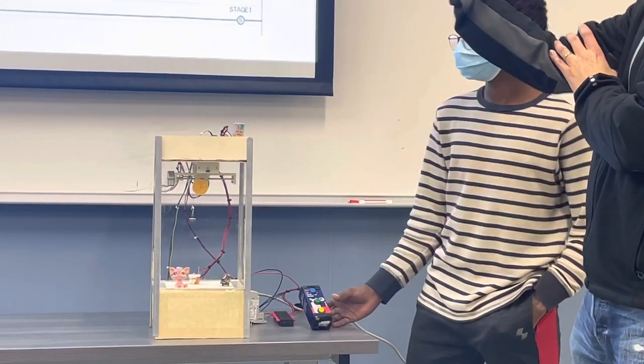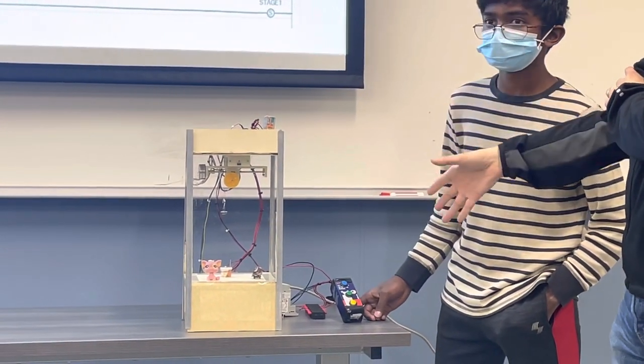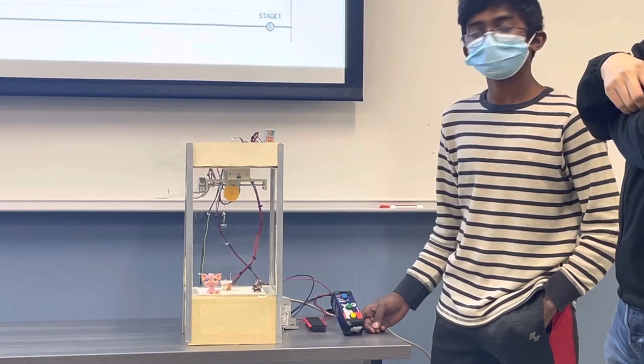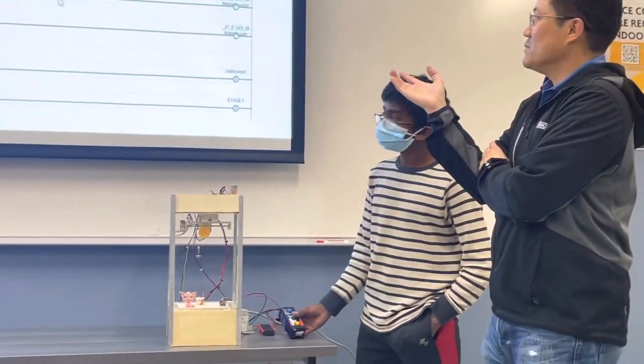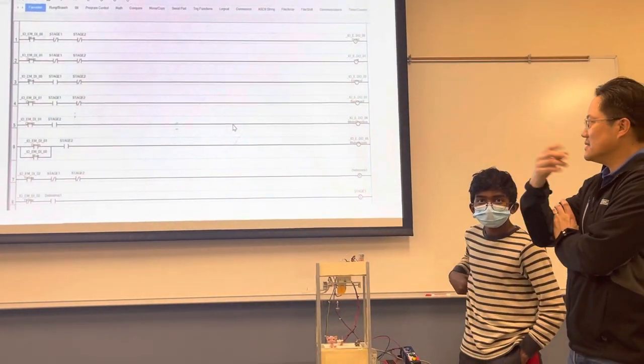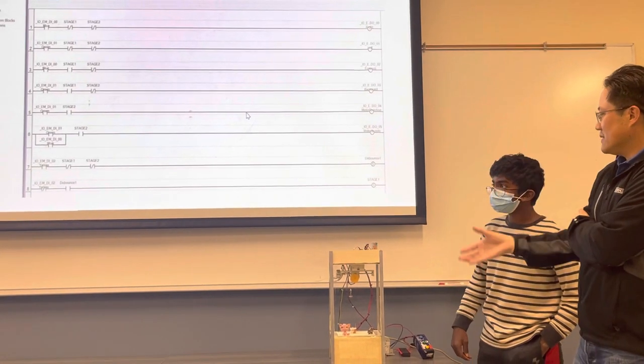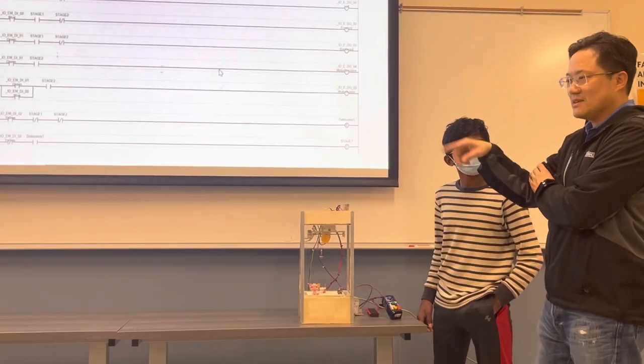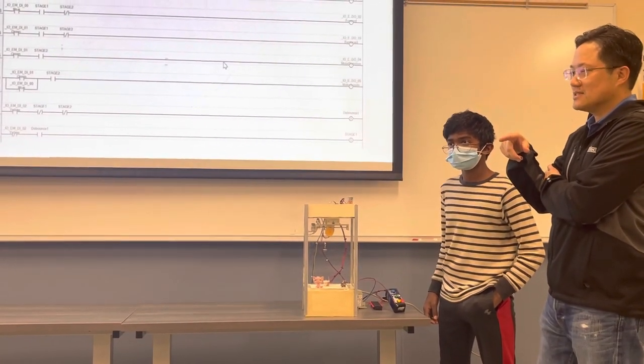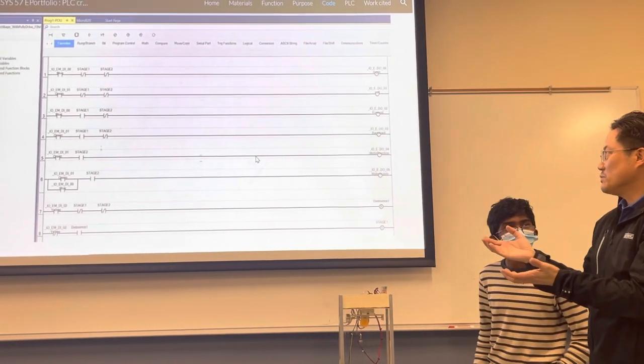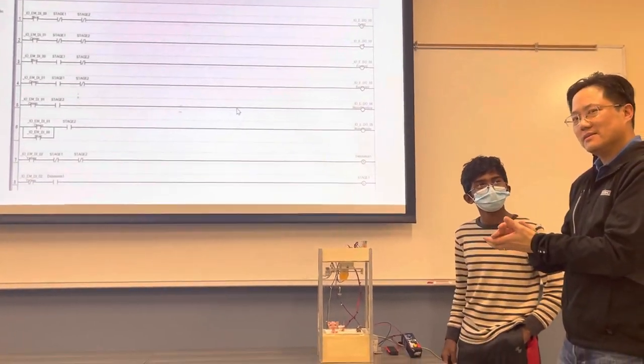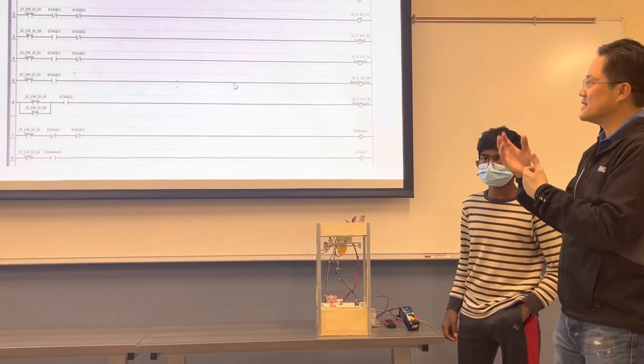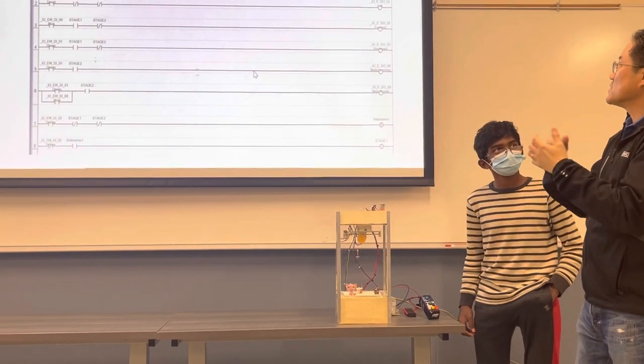The tricky part of that was we had to put in this debounce, which Josh thought about. When we press the button to change stages, we realized that we want to change the stage, press the button, it'll just continuously cycle through the stages because the button is down. So what we did is we put in this latch where we press the button, it's in this debounce stage, and when you let go, then that's the only time when it actually gets to the next stage. That was one of the tricky things we worked on.